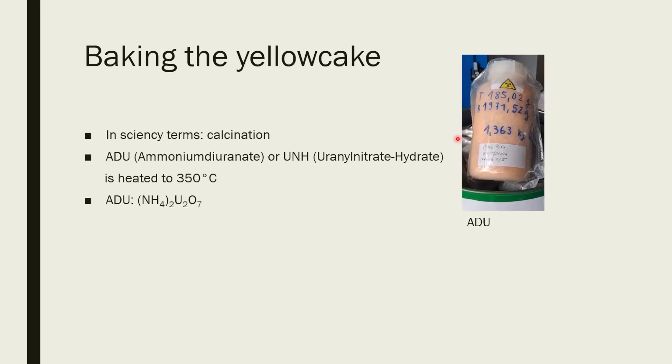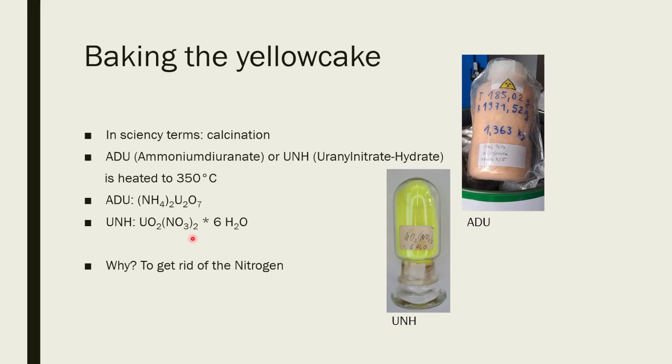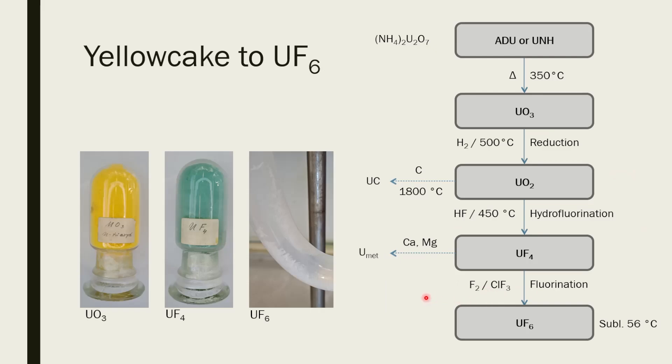Ammonium diuranate looks like this. It's a yellowish, orangish powder. And the uranyl nitrate hexahydrate looks like this. So why do we heat it? We heat it to get rid of the nitrogen, because the nitrogen will gas out in the form of ammonia gas. And what you will end up with is just mostly pure uranium trioxide, just a yellowish powder. And then you can further proceed with more chemical processing.